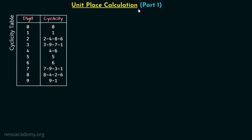In part one of unit place calculation, we will focus on four digits: zero, one, five, and six. We are keeping these four digits together in the same group because their cyclicities are similar — zero has cyclicity equal to zero, one has cyclicity equal to one, five has cyclicity equal to five, and six has cyclicity equal to six. This means for these four digits, the cyclicity is equal to the digit itself. When you calculate the powers of zero, one, five, or six, you will always get the digit itself at the unit place.